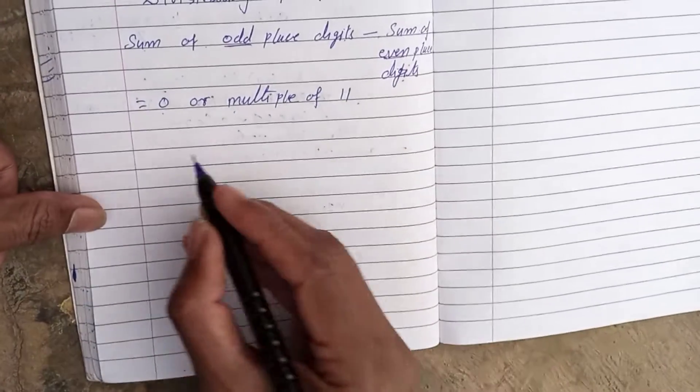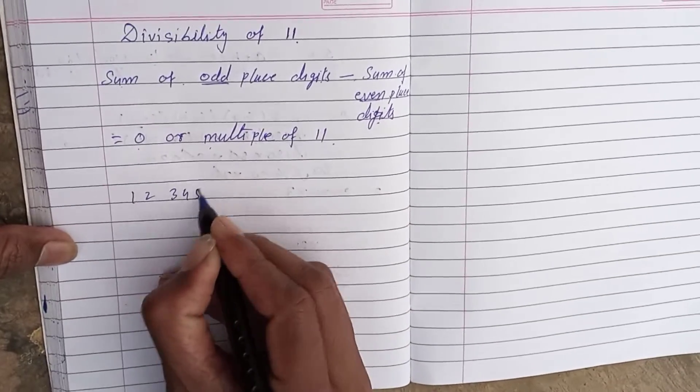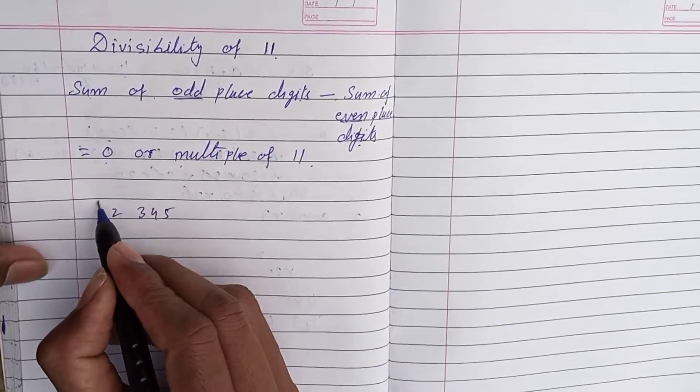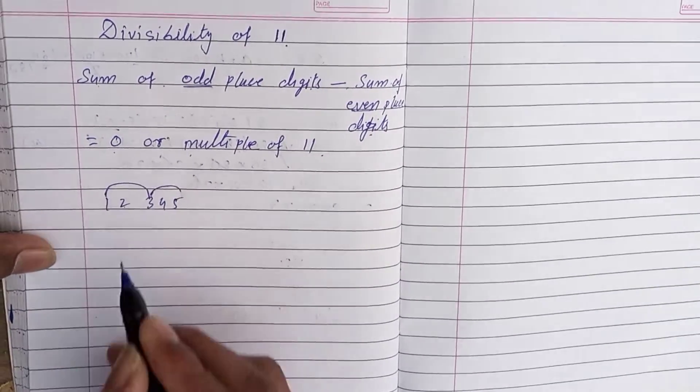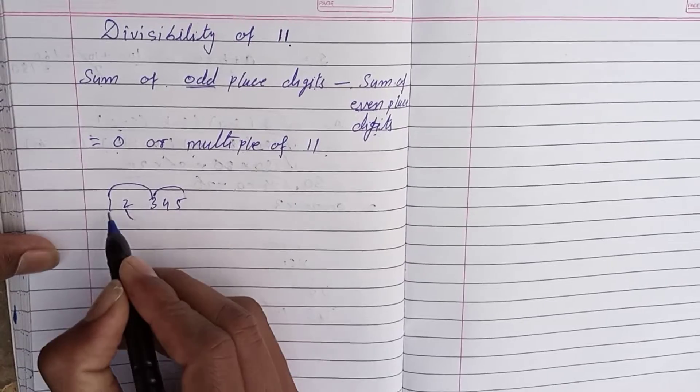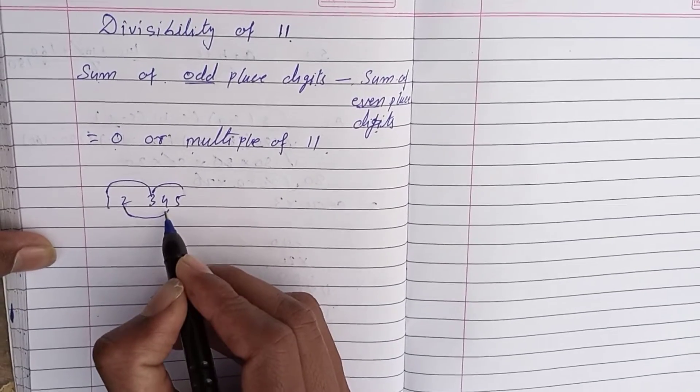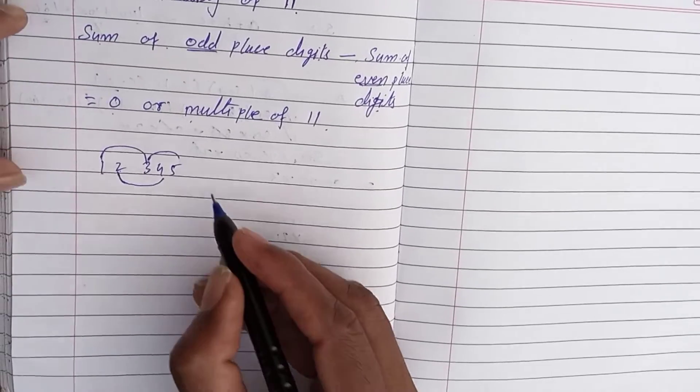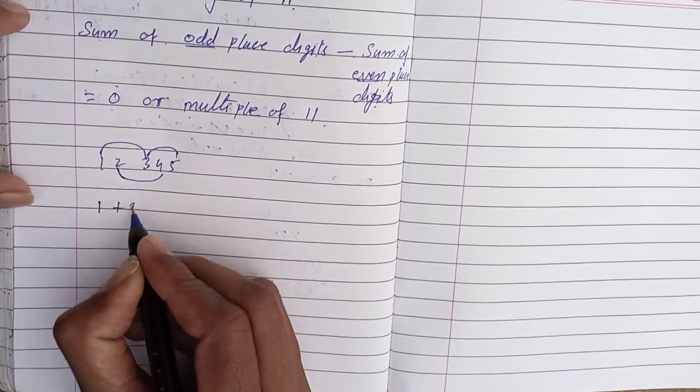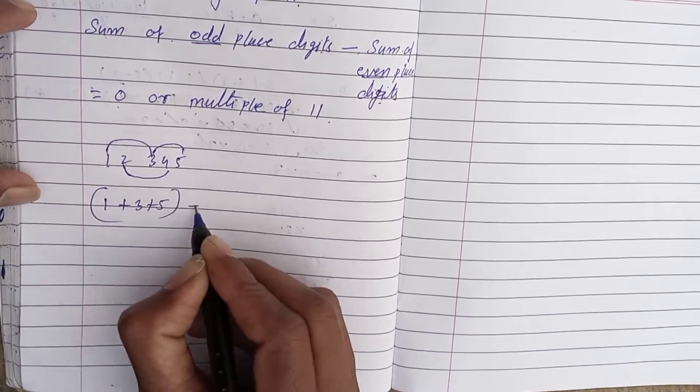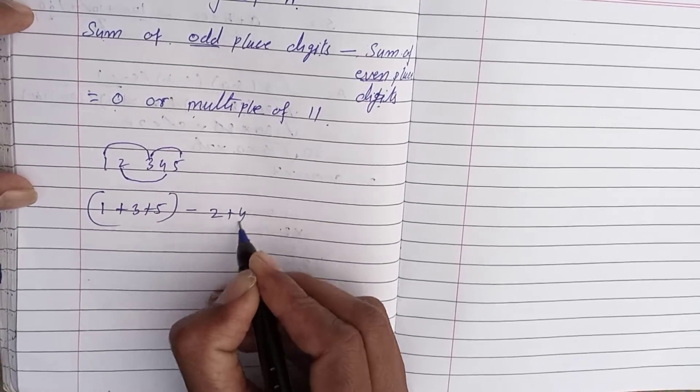Let's take one example. Suppose I write 1, 2, 3, 4, 5. In that number, we take one digit, leave one, take one, leave one, take one. We're taking the odd position digits. So, 1 plus 3 plus 5 minus 2 plus 4.